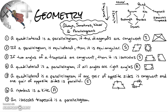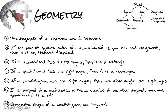Going sideways in the flowchart is never — for example, a parallelogram is never a trapezoid. Number seven: an isosceles trapezoid is a parallelogram. That's never true because it's trying to go sideways in the flowchart.